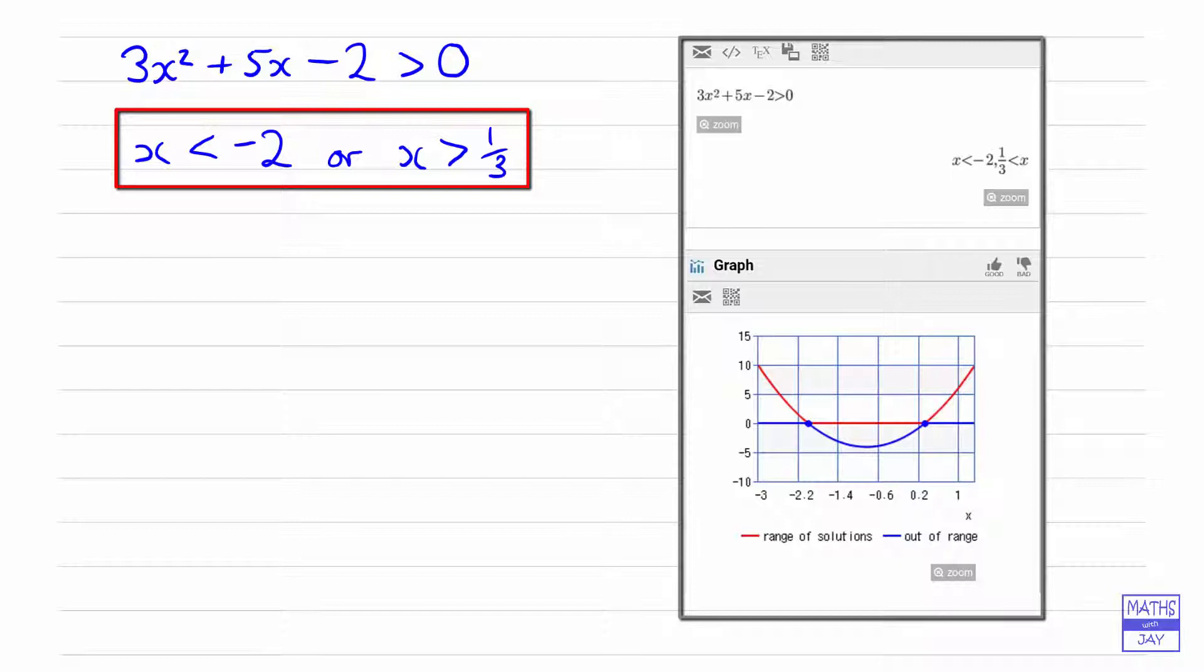And so you can see what they've actually done there is they've done a sketch of the graph y equals 3x squared plus 5x minus 2 and shown where it cuts the x axis.